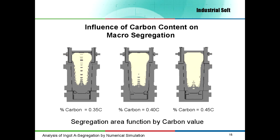In the next four slides I will present the influence of carbon, sulfur, silicon and molybdenum content on A-segregation in the 50-ton 4340 steel. To analyze the influence of carbon on A-segregation, the critical value alpha has been calculated for 0.35%, 0.40% and 0.45% of carbon. The results of simulations show that the A-segregation area size increases with the increase of carbon content. To minimize A-segregation area size, a carbon value at the minimum limit provided by specification is recommended.